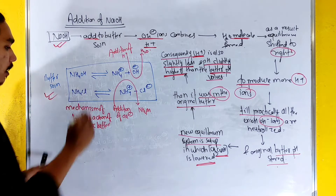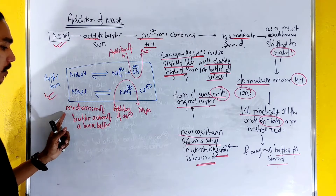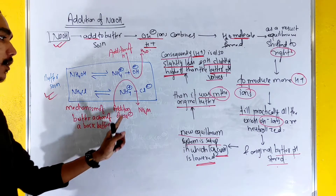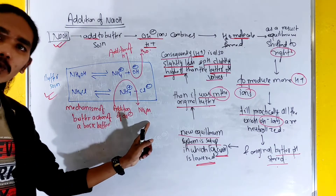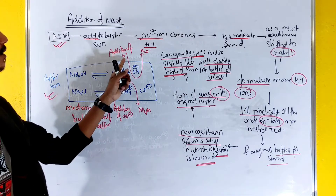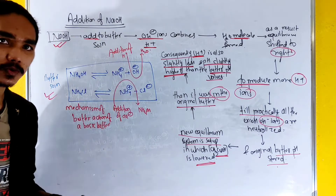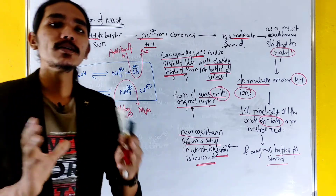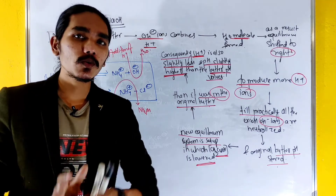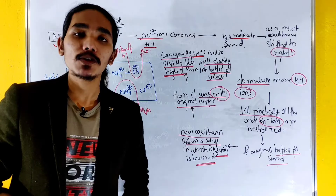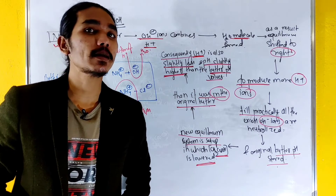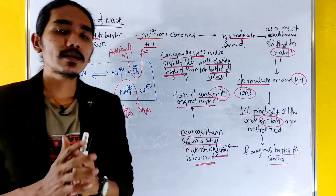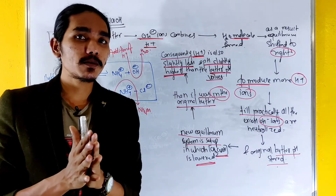This is the basic buffer action — the addition of OH- ions is countered by the production of H+ ions, restoring the original pH equilibrium. In the same way, the buffer resists pH change.